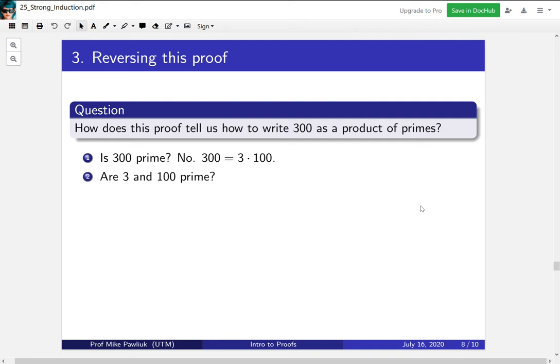Okay, so now the recursive step tells us to ask the same question about both of the factors. These are the a and b. Are 3 prime and is 100 prime? Well, the answer for 3 is yes, it is prime, so we stop breaking it down. But for 100, the answer is no, it has its own a and b, 4 and 25.